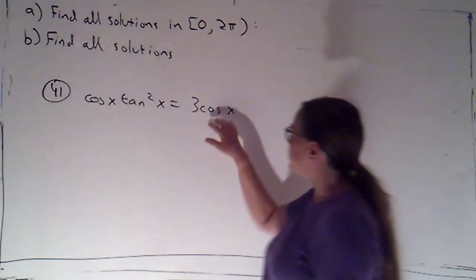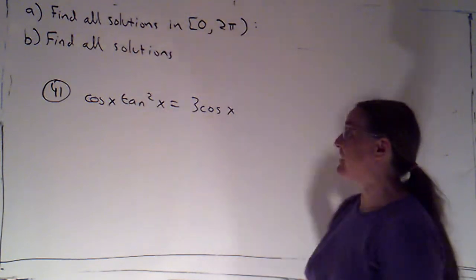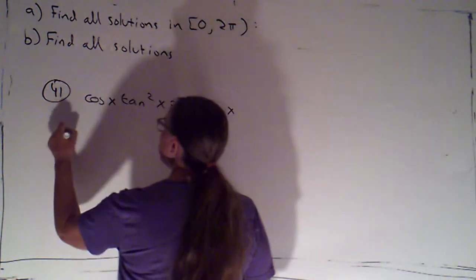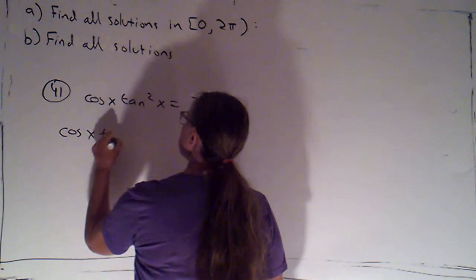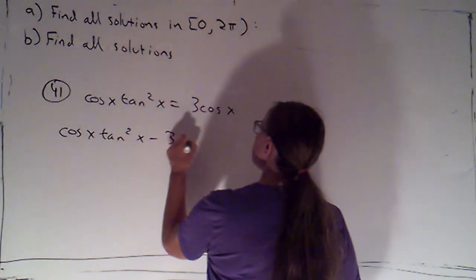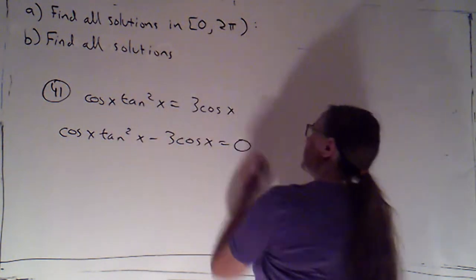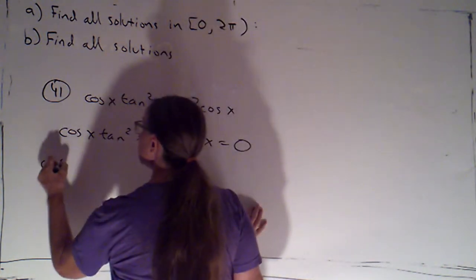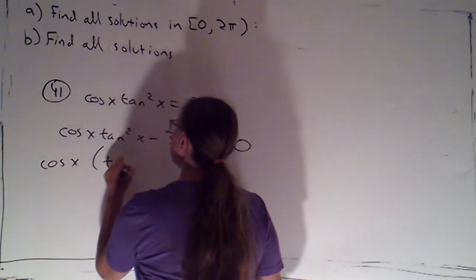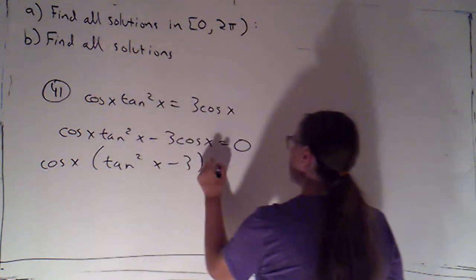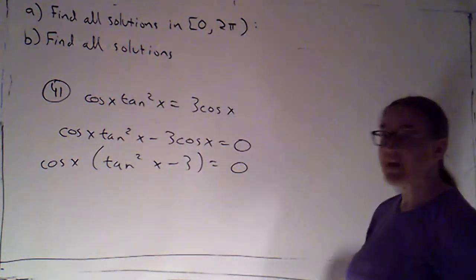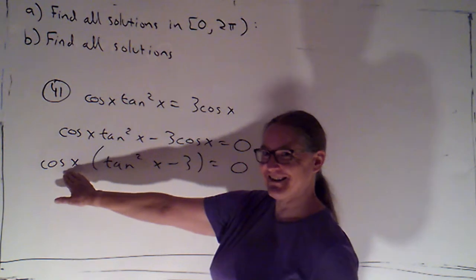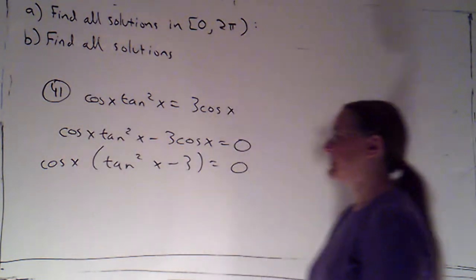Alright. So since I can't divide the cosine out, I'm going to subtract it over to the other side. So cosine x tan squared x minus 3 cosine x is equal to zero. And now I can factor out a cosine x. And that's times tangent squared x minus 3 is equal to zero. So I can see if cosine of x is zero, that's going to give me some solutions.